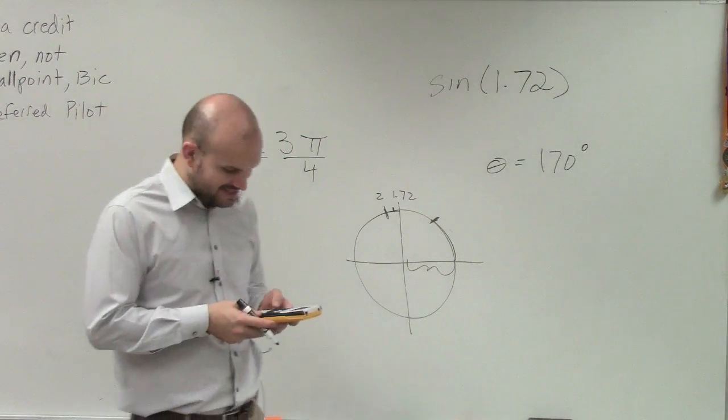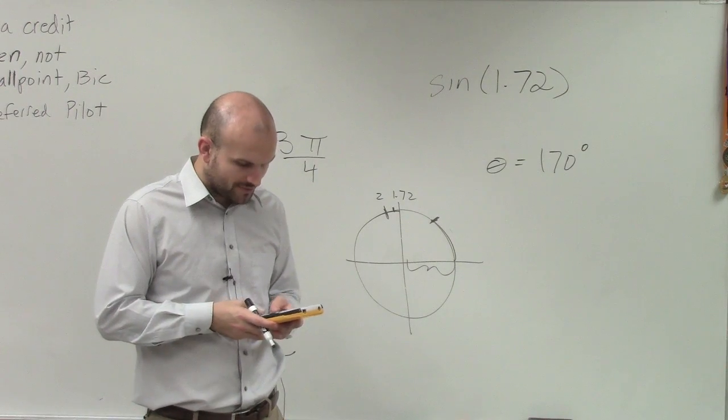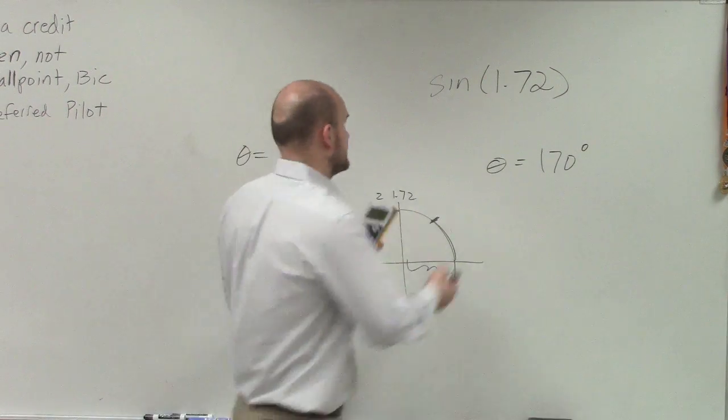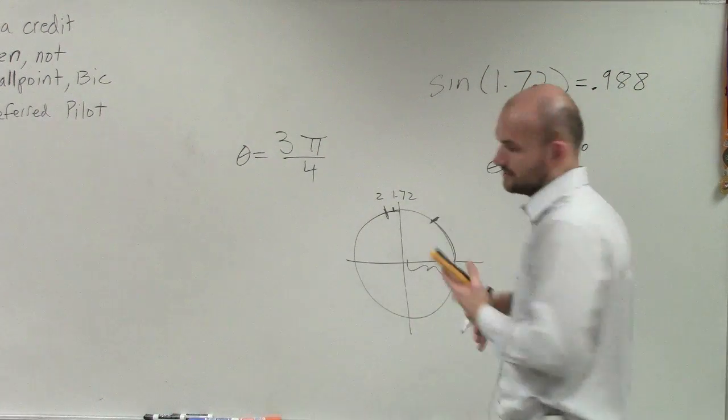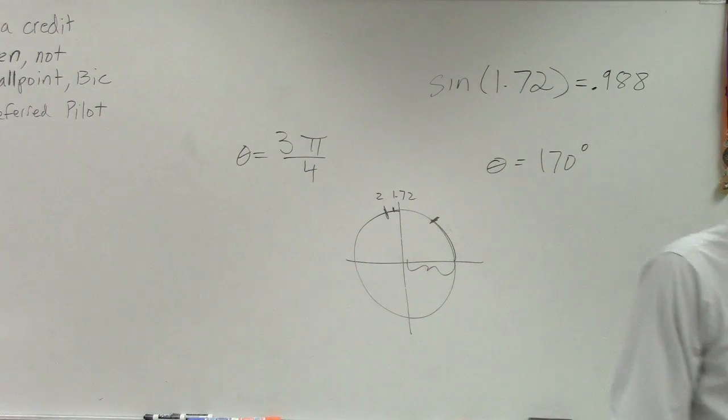now when I do the sine, 1.72. Crap, forgot to do one. Here you're going to have 0.988, non-rounded, but just approximate.